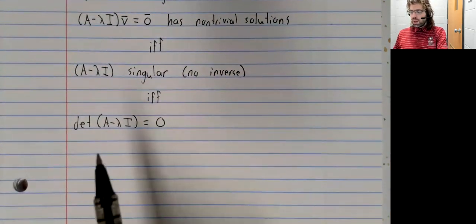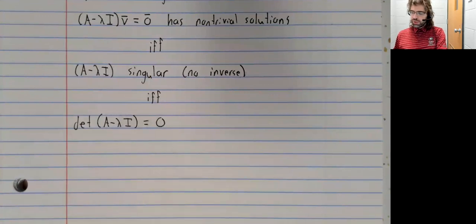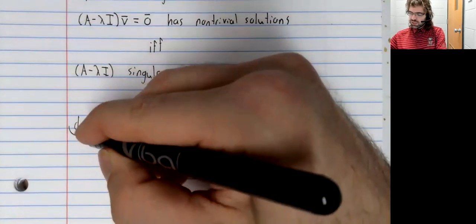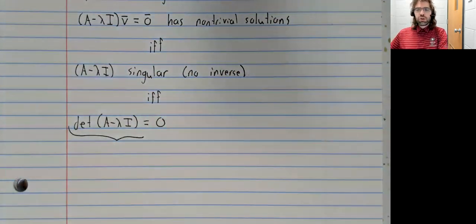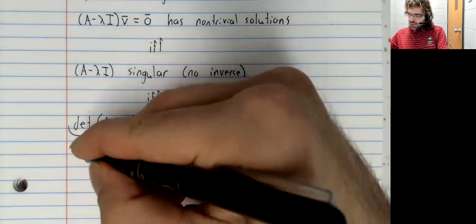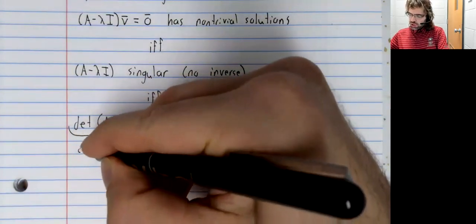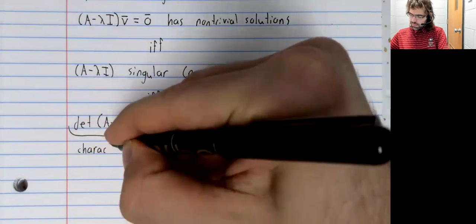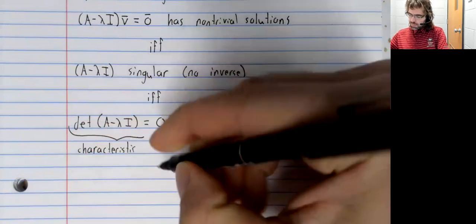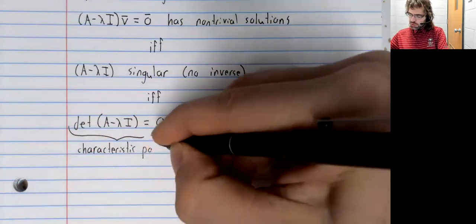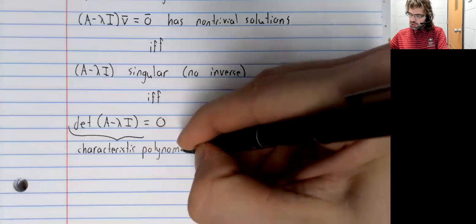What is the determinant of A minus lambda I? Well, it turns out to be a polynomial and it has a special name: it's the characteristic polynomial